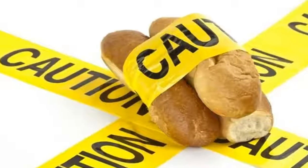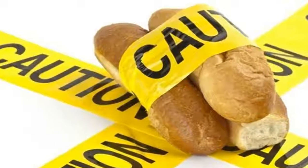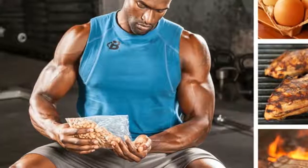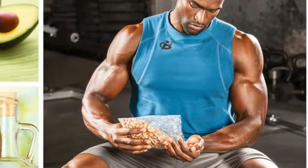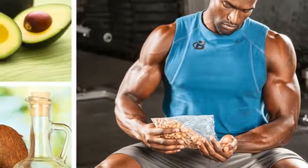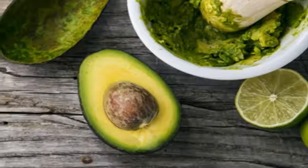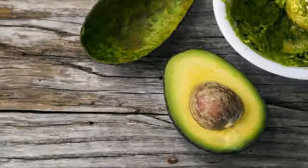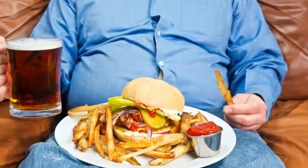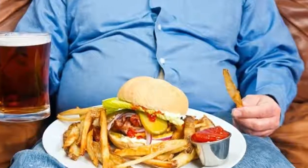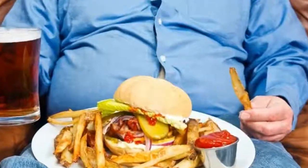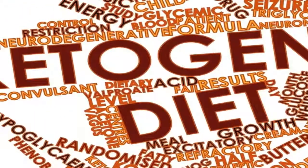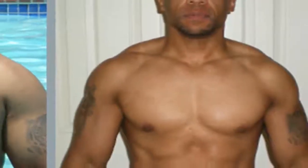Now that you have information about your body's present condition and info on ketosis, head over to a keto calculator and figure out how many grams of carbohydrates, fat, and protein you need each day to lose weight. These numbers are critical, so don't forget to write them down. I keep a piece of paper pinned to my wall so I can easily see them when planning meals.